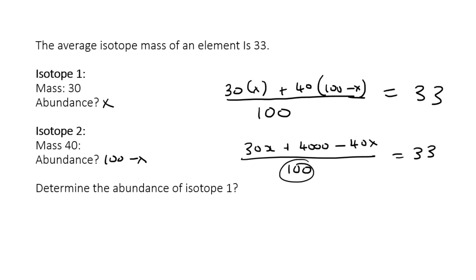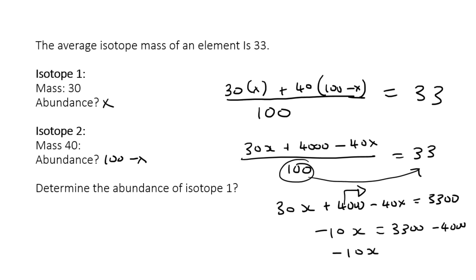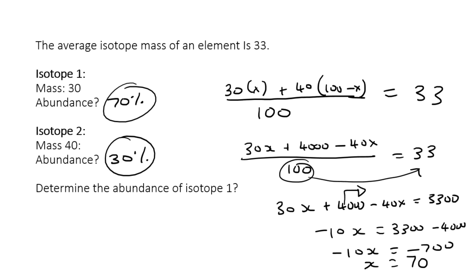Multiply both sides by 100: 30x + 4000 - 40x = 3300. Combining like terms: -10x + 4000 = 3300. Move 4000 to the right: -10x = 3300 - 4000 = -700. Divide both sides by -10: x = 70. So the abundance of isotope 1 is 70% and the abundance of isotope 2 would be 30%. That is how you solve a question like that.